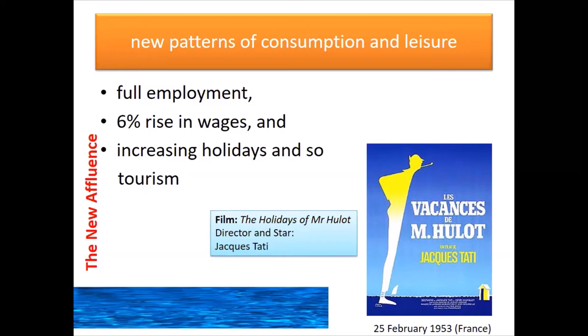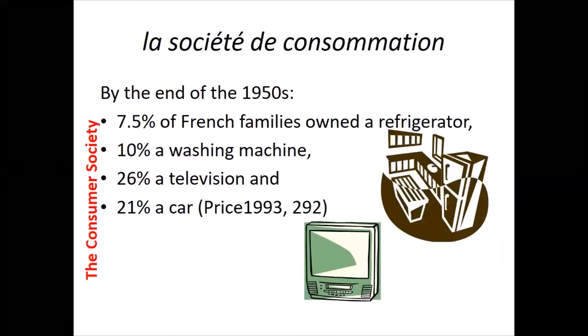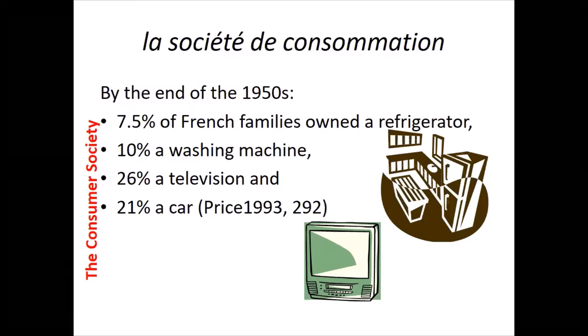We call that period the new affluence, and out of the new affluence came the consumer society — that's the way our capitalism operates today. People make things that don't cost the company very much, sell them for a lot of money, and we buy them, keeping the economy going. A thing like your iPhone doesn't cost that much to make in China; it sells for £600 or £800, and that profit keeps the economy going.